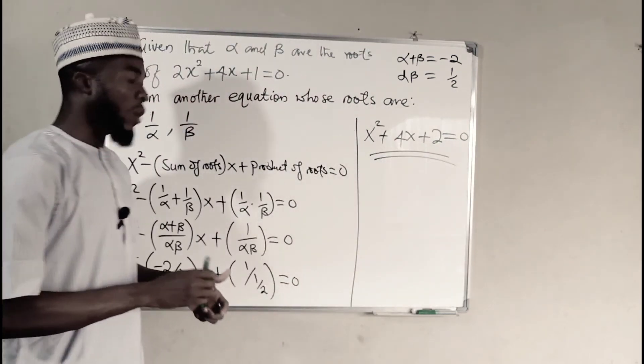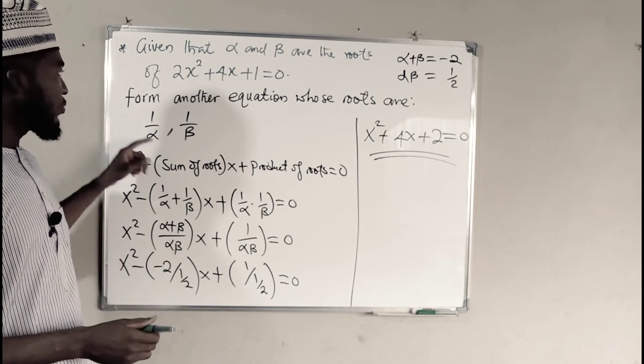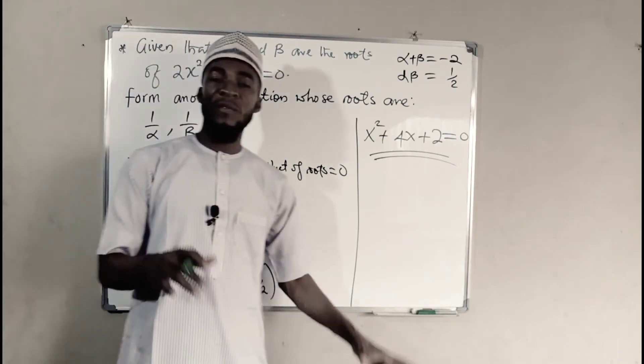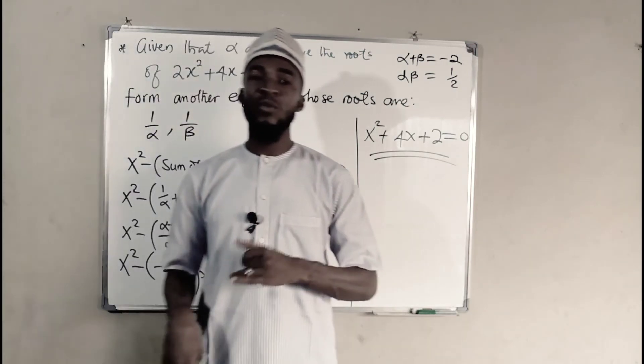And hence, this is our new quadratic equation whose roots are 1 over alpha and 1 over beta. And this is all I have for you today. Thank you for watching and do have a nice day.